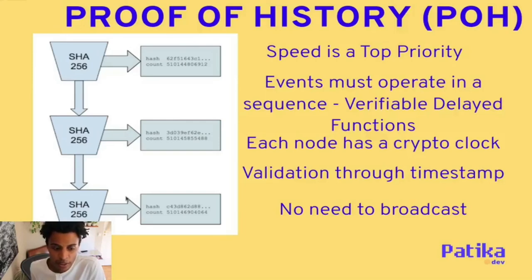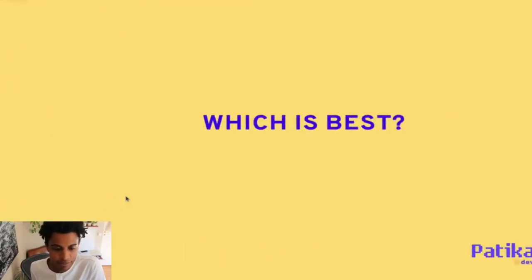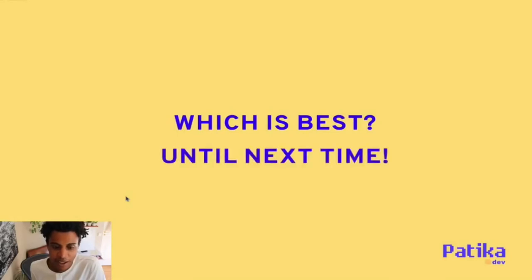This is where things speed up — it's more lightweight because there's no need to replicate or broadcast every block when all nodes process it internally. That's one of the core speed advantages of proof of history. And we'll probably answer the question of which is best next time.